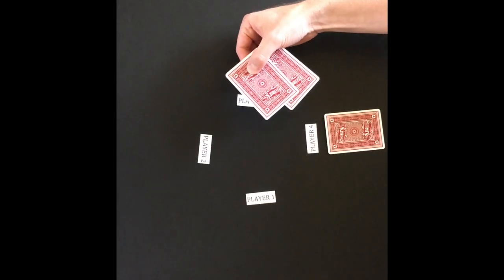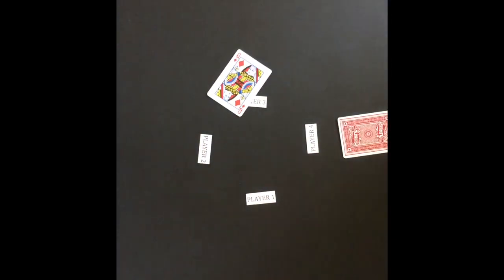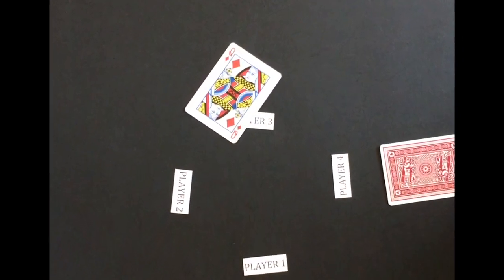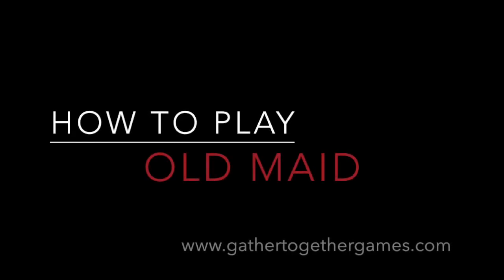Skipping to the end, player 4 pairs his last card and leaves player 3 with the odd queen. Player 3 is the Old Maid and loses the game. That wraps up how to play Old Maid. Thanks for watching.